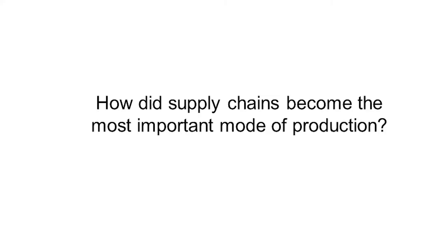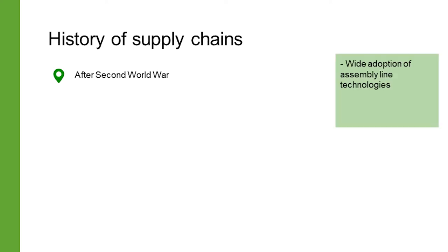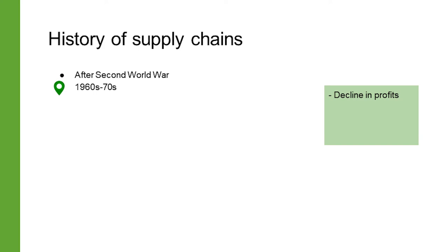Let's now learn through a historical perspective how such global supply chains emerged as the key model of global production. The adoption of assembly line techniques for mass production in western economies after the Second World War resulted in economies of scale and increased profits. But this changed towards the end of the 1960s when profits started declining — the same time that the influence of trade unions also started declining.